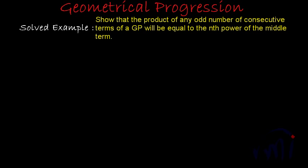We have one tricky problem in the series of geometrical progression. The statement says: show that the product of any odd number of consecutive terms of a GP will be equal to the nth power of the middle term.